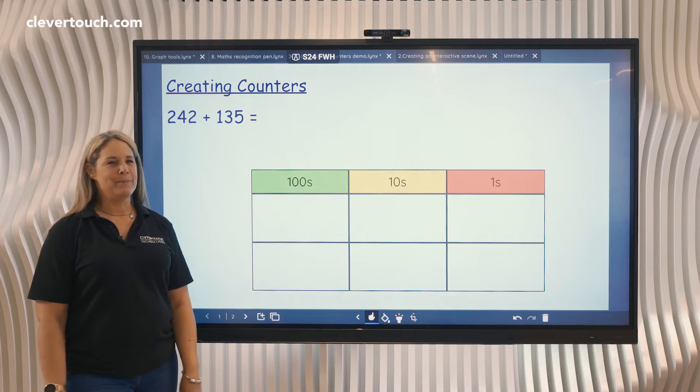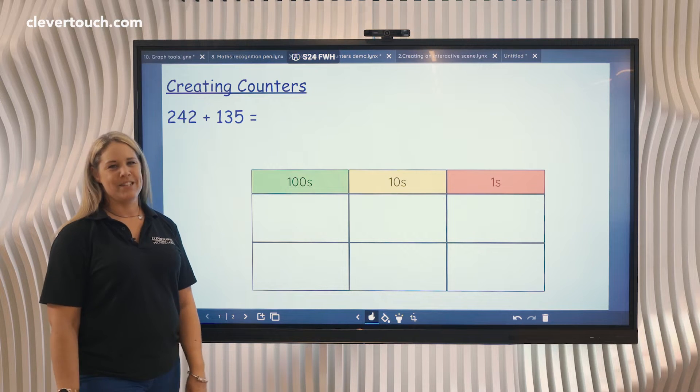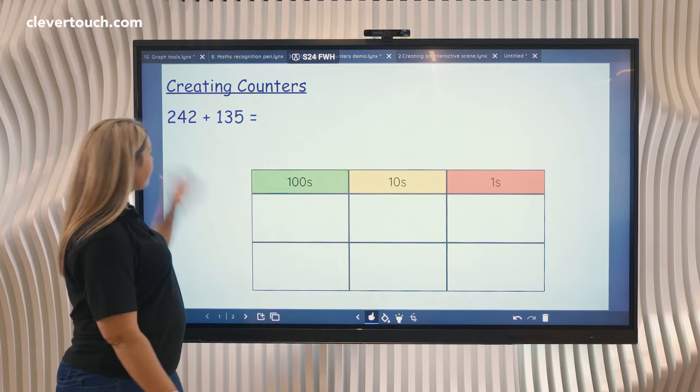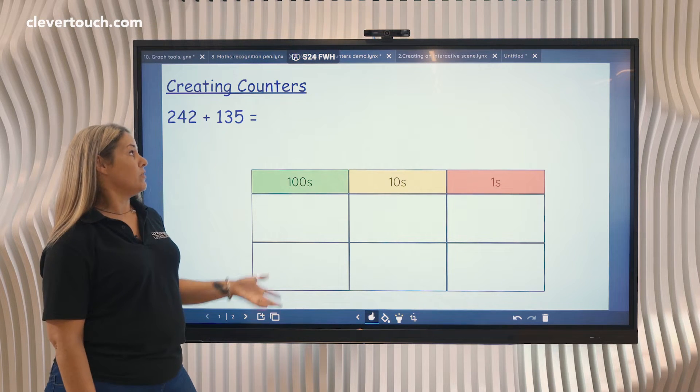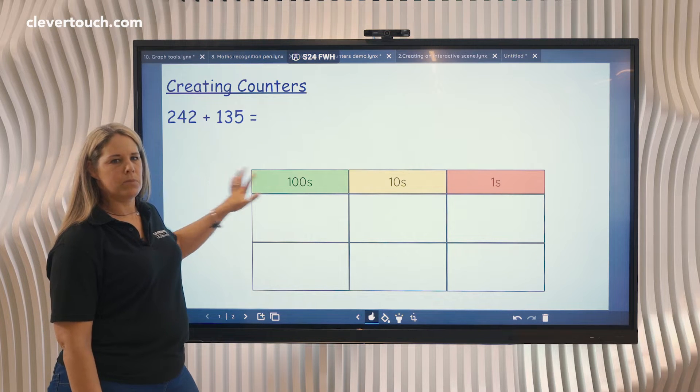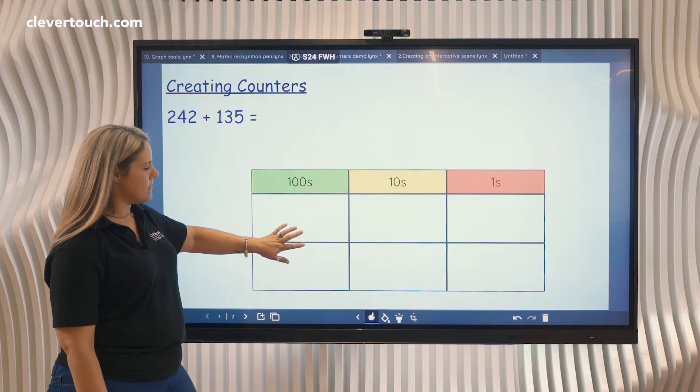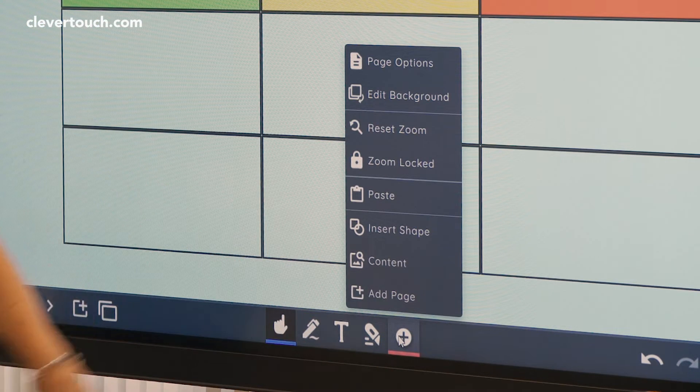Hello, welcome to tip number six of our top 12 tips for Lynx interactive whiteboard. We're going to be looking at how we can create counters for using for models and images. I've already set a background up here, so I'm just going to go into our content to get some counters.